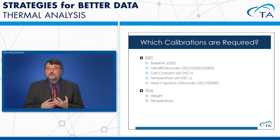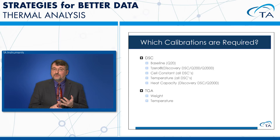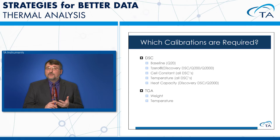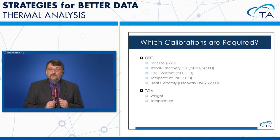The calibrations we do depend on which DSC you have. For the Q20 DSC, we have a baseline calibration. For T0 DSCs like the Q2000 and Discovery DSC, we have a T0 calibration. All DSCs have a cell constant calibration and a temperature calibration. The Q2000 and Discovery DSC also have a direct heat capacity calibration. For TGAs, we have weight calibration and temperature calibration.